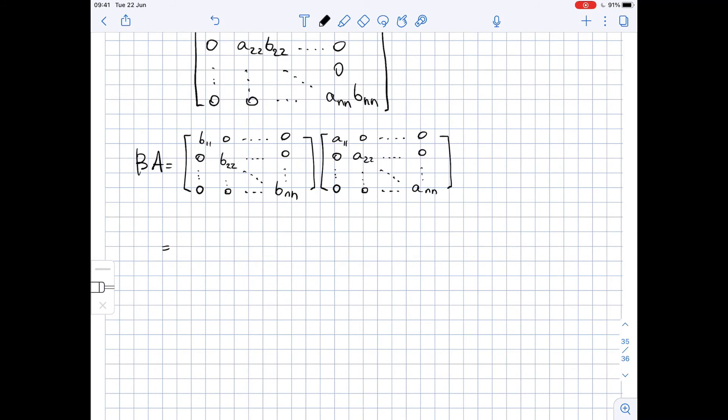So here again we will get B₁₁ times A₁₁, then all of the rest are zeros. In the next row we have zeros, in the next row we have zeros, then we have B₂₂ times A₂₂ and then the rest are zeros.